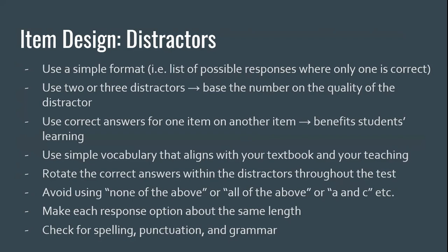Aim for each response option to be about the same length. Students who are good test takers know the correct answer tends to be the longest — making distractors equally plausible requires structural similarity. If one option seems way off from the others, it cues students that it's either totally wrong or the correct answer. Instead of processing the content of each distractor, they're processing the structure of your item. Also, last but not least, check for spelling, punctuation, and grammar, because small errors can introduce significant error, particularly for students for whom English may be a second language.